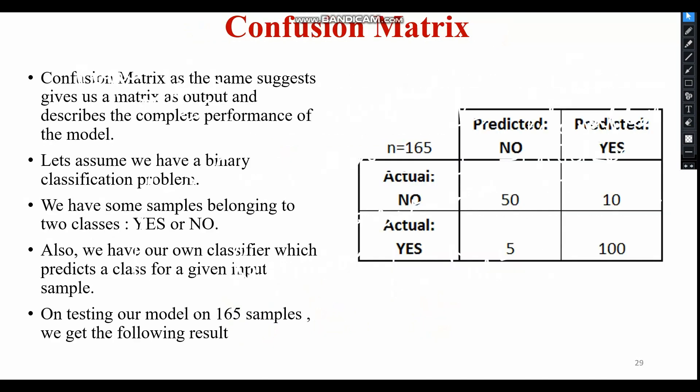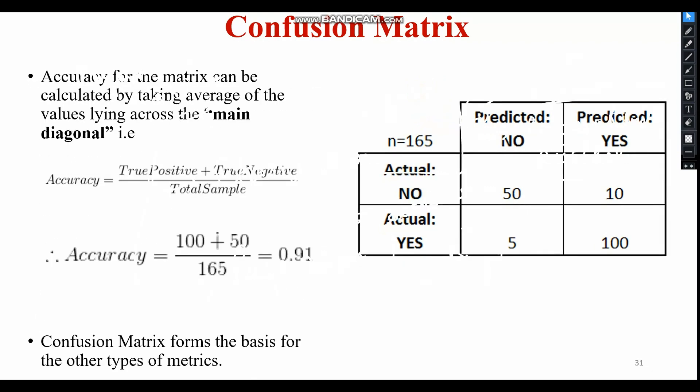The next metric in classification is the confusion matrix. It is a tabular representation of the prediction outcome of a binary classifier — binary meaning 0 or 1. It is used to describe the performance of a classification model on a set of test data when the true values are known. The terminology includes true positive, true negative, false positive, and false negative. A detailed video is available on the channel for this topic.